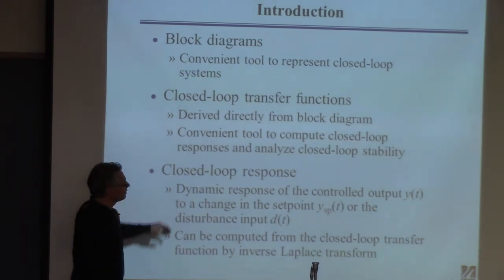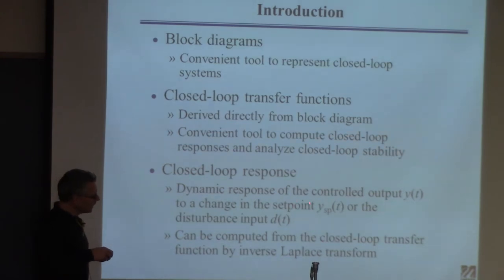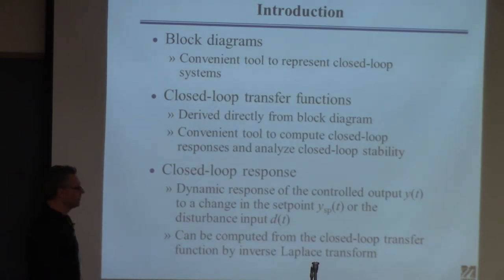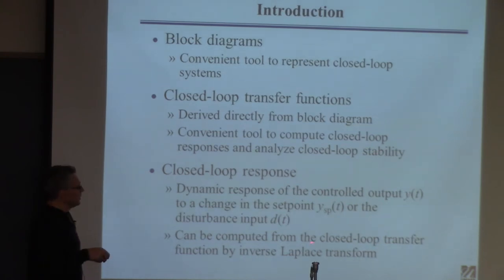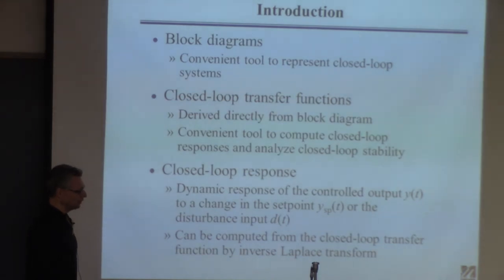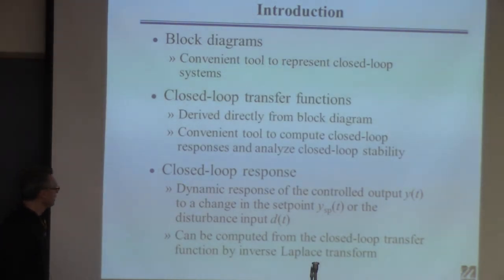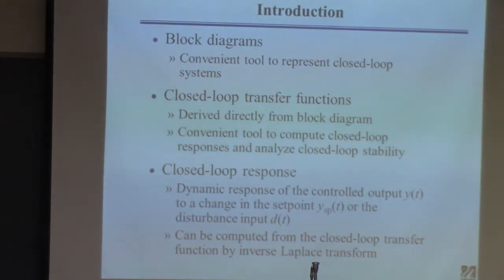What we're going to focus on today is the closed-loop response. You give a change in the set point or a change in the disturbance, and your job is to calculate what the output looks like. Once you have the closed-loop transfer function, you specify a step change M over S, multiply the two together, and take the inverse Laplace transform. The problem is that the closed-loop transfer function expressions are complicated, which greatly enhances the chance of having to do partial fraction expansion.